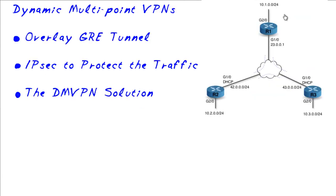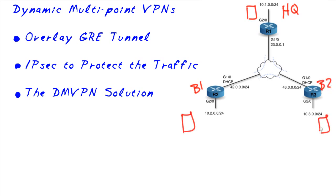To really appreciate and understand Dynamic Multipoint VPNs, let's use a business requirement. Let's say we have a headquarter site right here for Acme Incorporated, and they've got a server. We have branch office number one and branch office number two, and they've also got some servers. These servers aren't for public consumption — they're just for the individual users of the company, regardless of what site they're at. One thing we can do is have R2 build a GRE tunnel between itself and the headquarter site, maybe that's network 172.16.1.0.